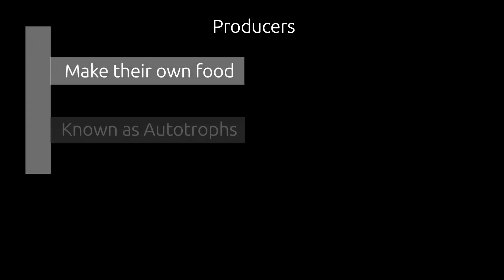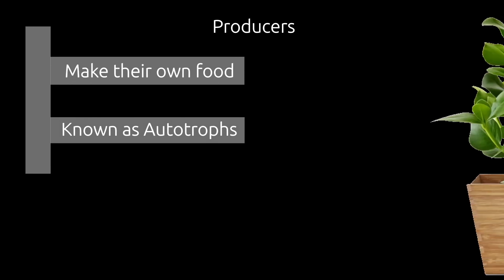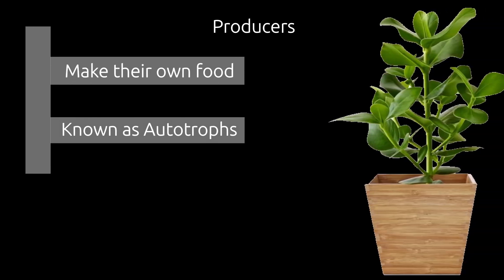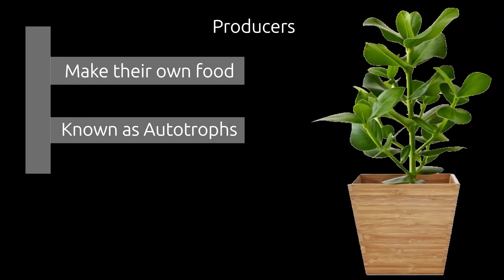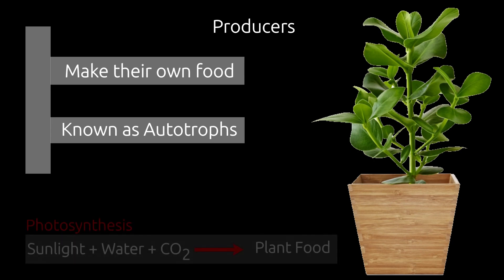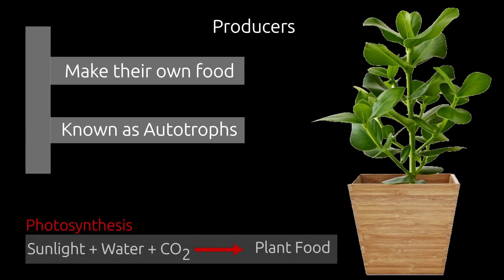Producers make their own food. They are also known as autotrophs. Plants are the only producers in our Earth's ecosystem. They perform photosynthesis and convert sunlight, water, and carbon dioxide to food.